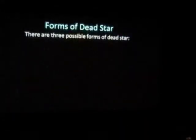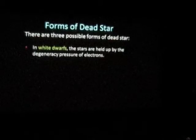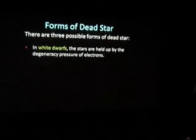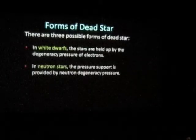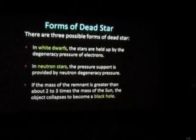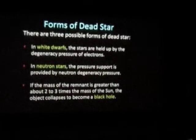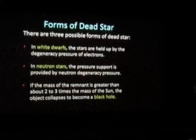At the end of that evolution, we end up with what I call dead stars, and there are three possibilities. We're either going to get white dwarf stars, which have been known for a long time — they're held up by ordinary pressure of electrons in a degenerate state. There are neutron stars where the same process of pressure balance is provided by the neutrons in the star. And then if the mass of the remnant is greater than about two or three times the mass of the sun, then the object collapses to a black hole.